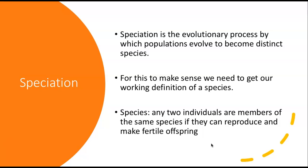If any two individuals cannot mate and make offspring that are themselves fertile, they are not part of the same species. This definition is basically the biological species concept, where any two individuals can be members of the same species if they can reproduce and the offspring can also reproduce.